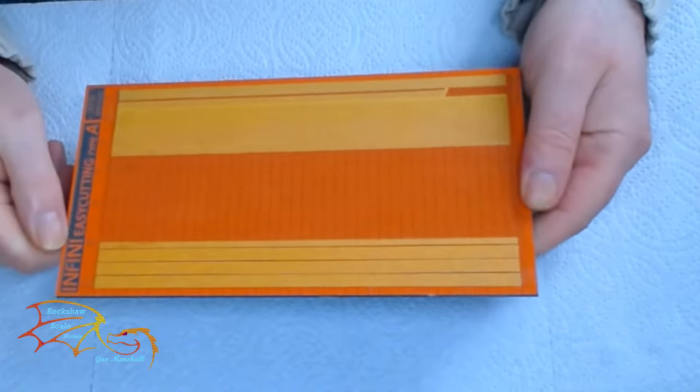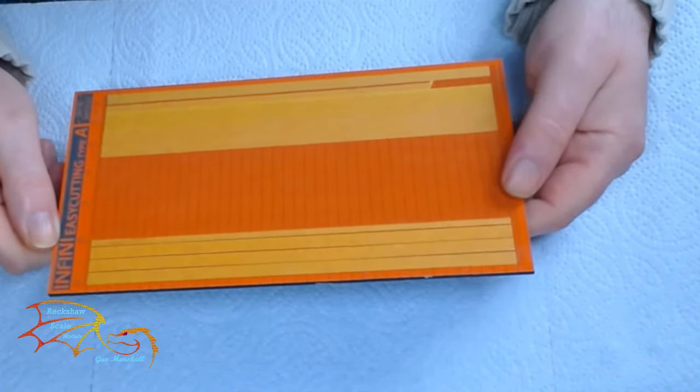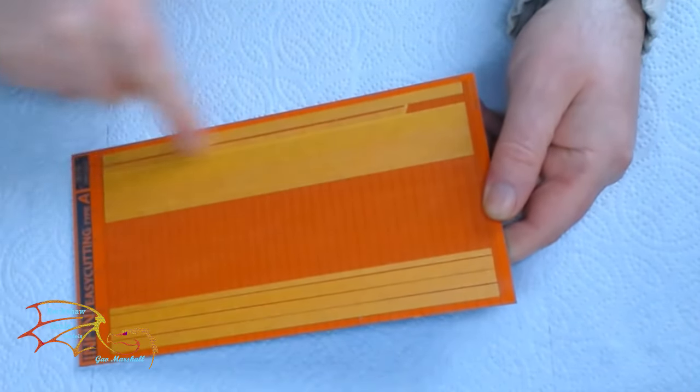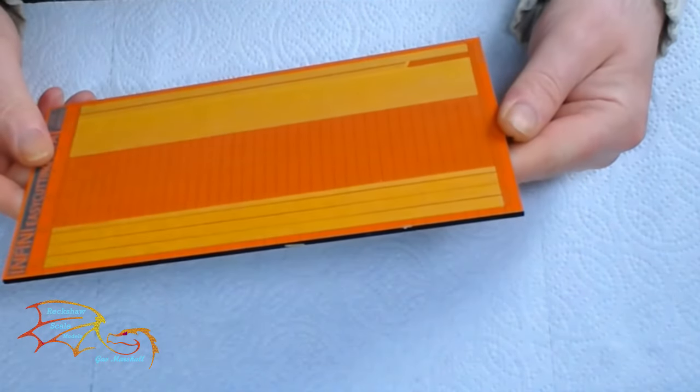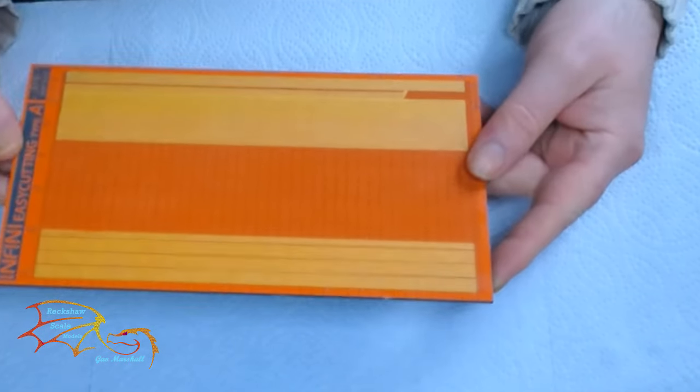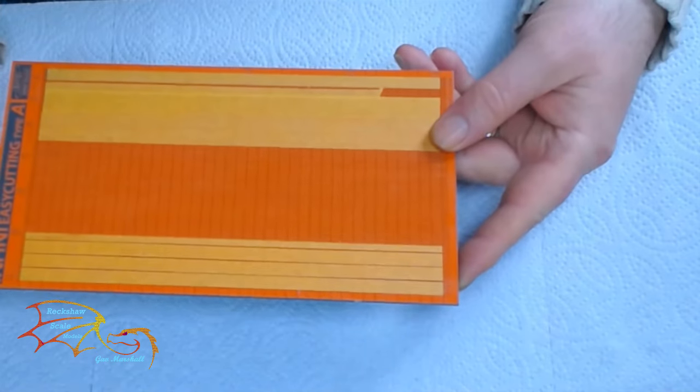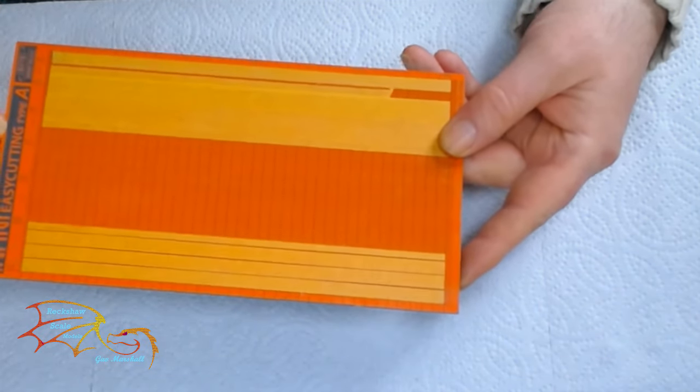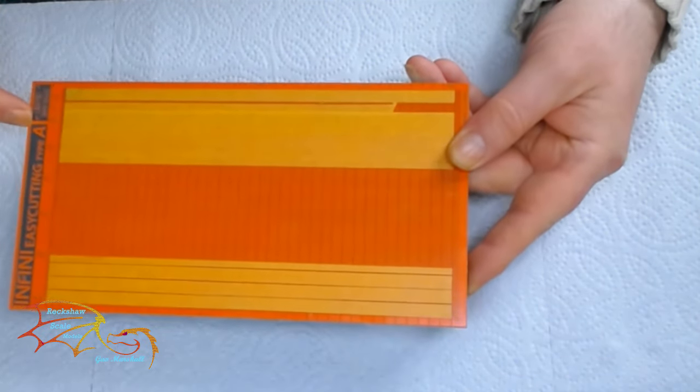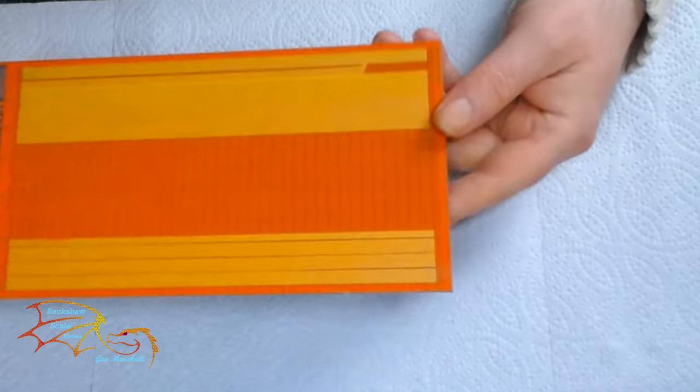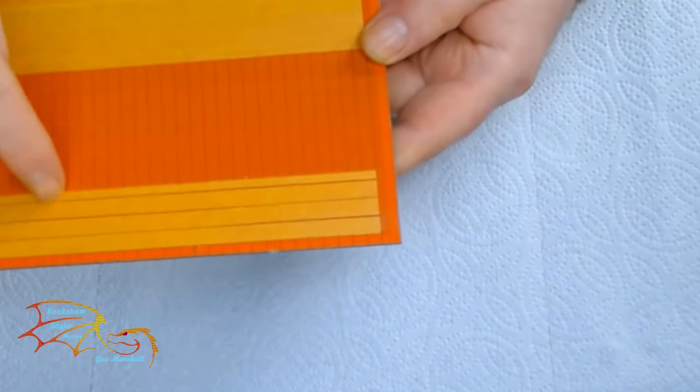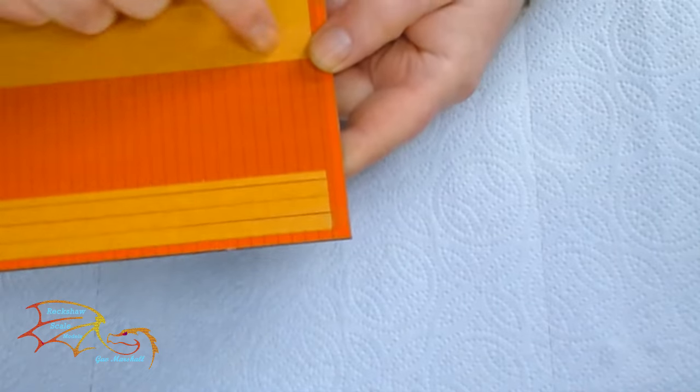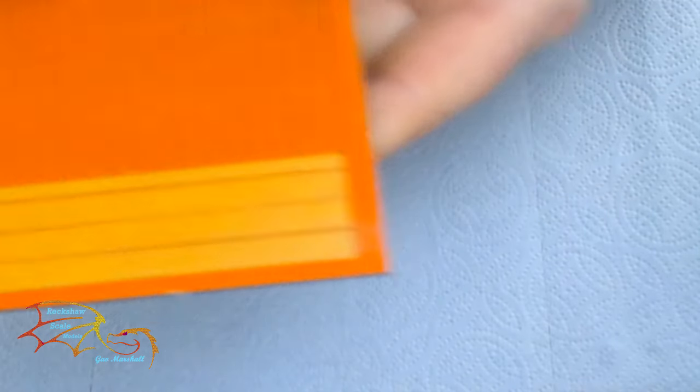Before I carry on with the build, I've been asked to show a little bit more about these cutting jigs for the masking tape. These are from a company called Infiniti EasyCut Type. This is Type A. If you go up to the camera, you can see these marks on here. You can just about make out all the vertical marks and horizontal marks.